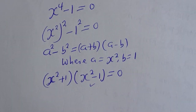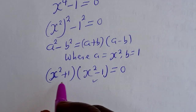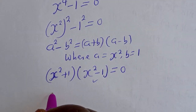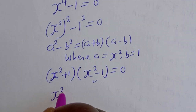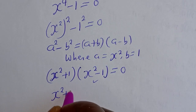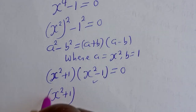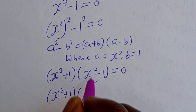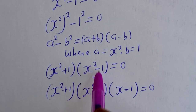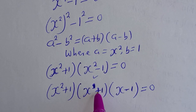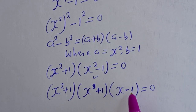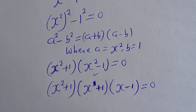So S squared minus 1 is also in the form of a perfect square. Then we have (S squared plus 1)(S plus 1)(S minus 1) is equal to 0.